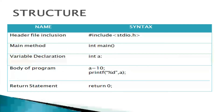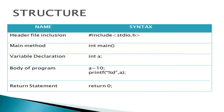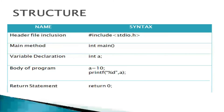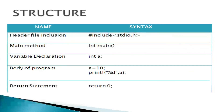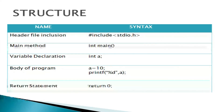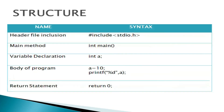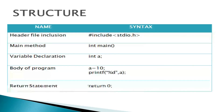If you look at the structure of a C program, there is a header file inclusion section. The header file inclusion is used for inbuilt functions and is placed at the top of the program. The next part is the main method, which is where the program starts.